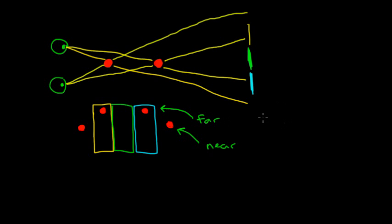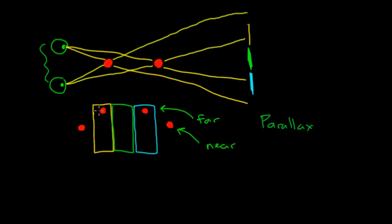This phenomenon — where an object appears to move relative to the background depending on your vantage point, and how much it moves depends on how far away the object is — is referred to as parallax. It's how we see depth perception, and it's ultimately how we measure distances to nearby stars. The distance between your two vantage points, or the baseline, is very important: the longer the baseline, the more effectively you can measure the parallax of very distant objects.